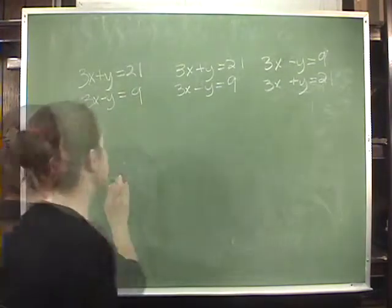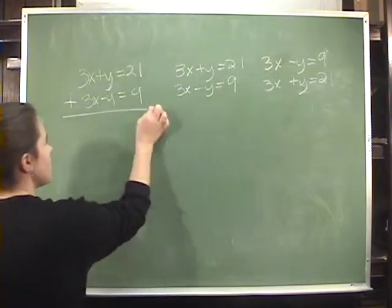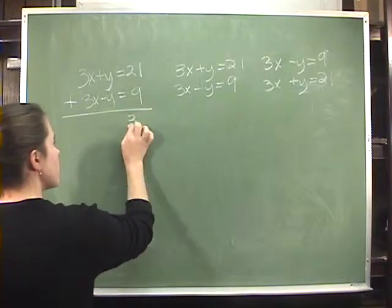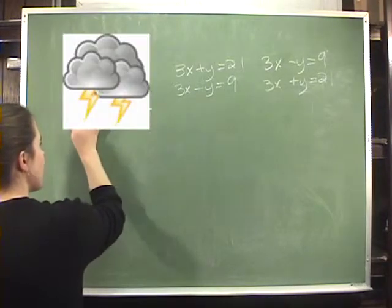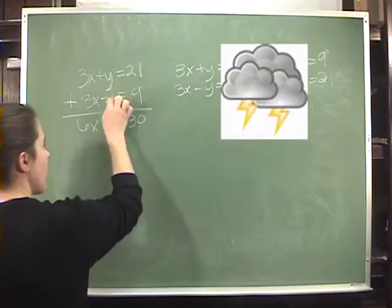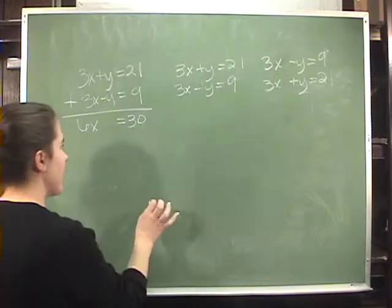But let's start over here first. If I want to add these two equations together, 21 plus 9 is 30, 3x plus 3x is 6x, and y minus y is 0, so I can leave it out.